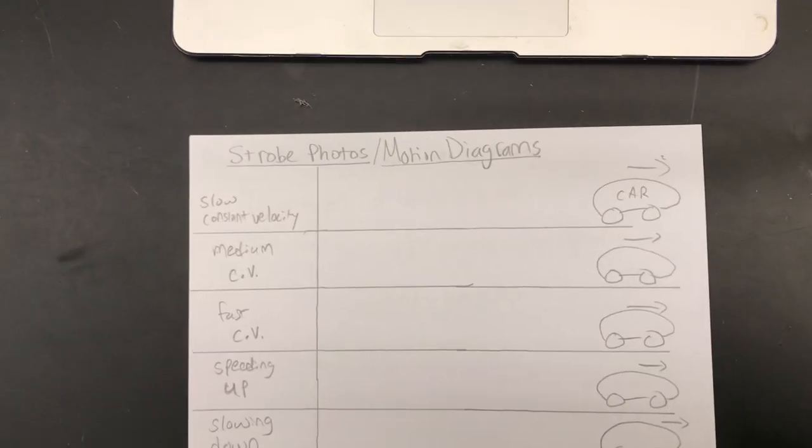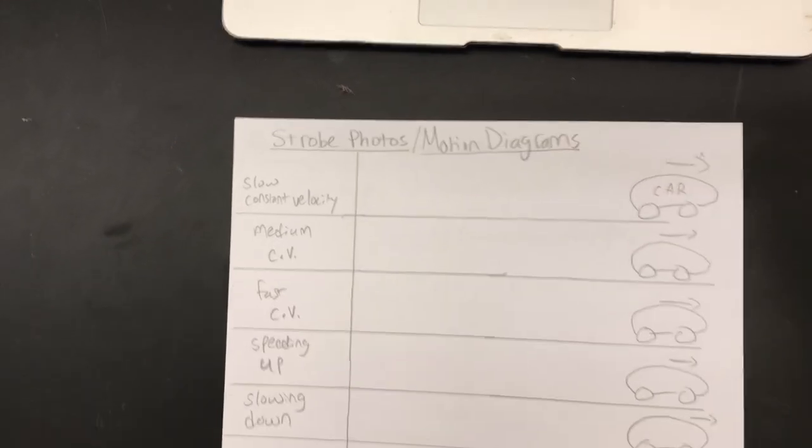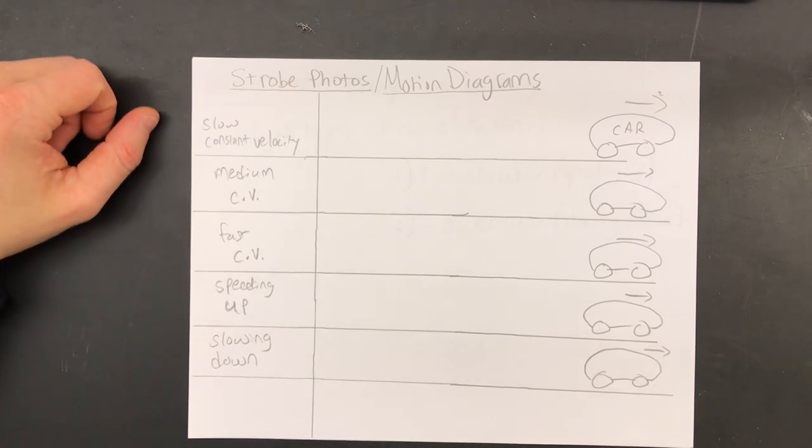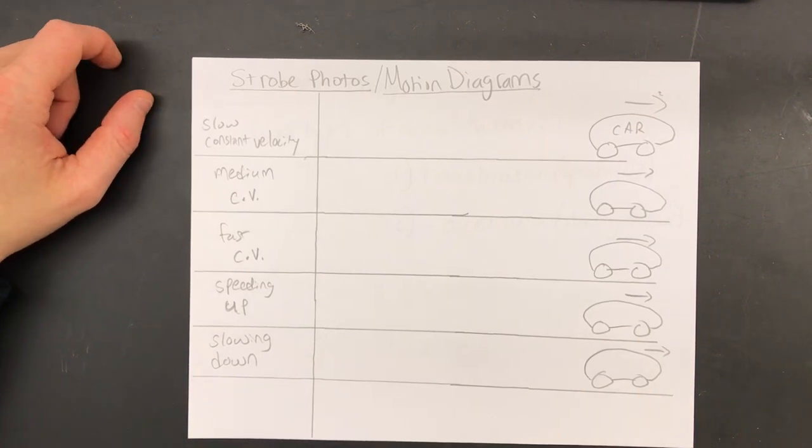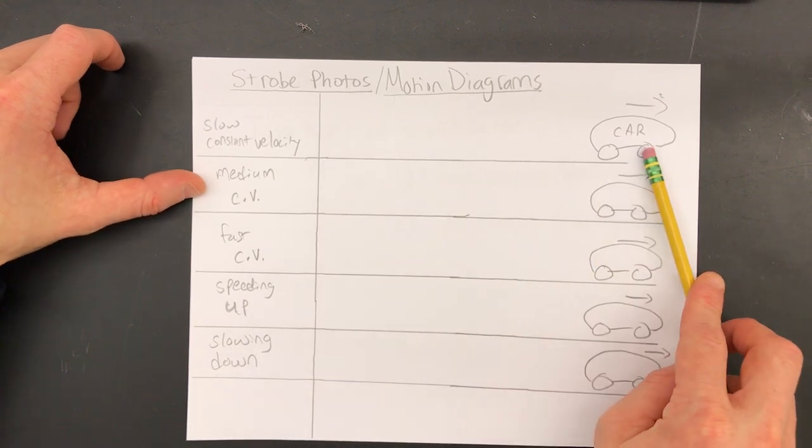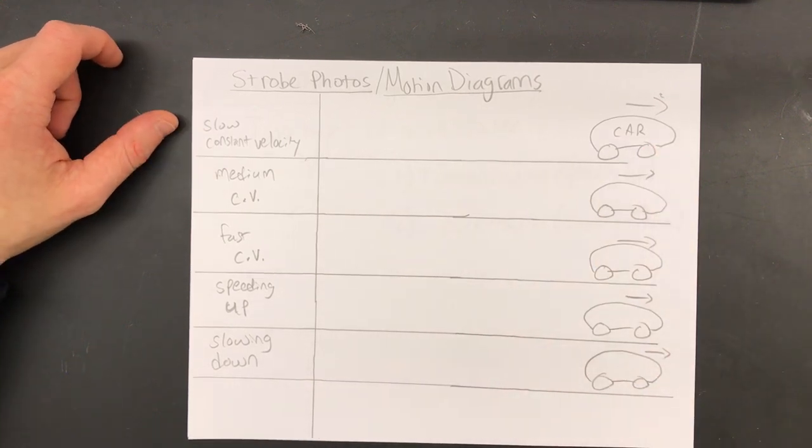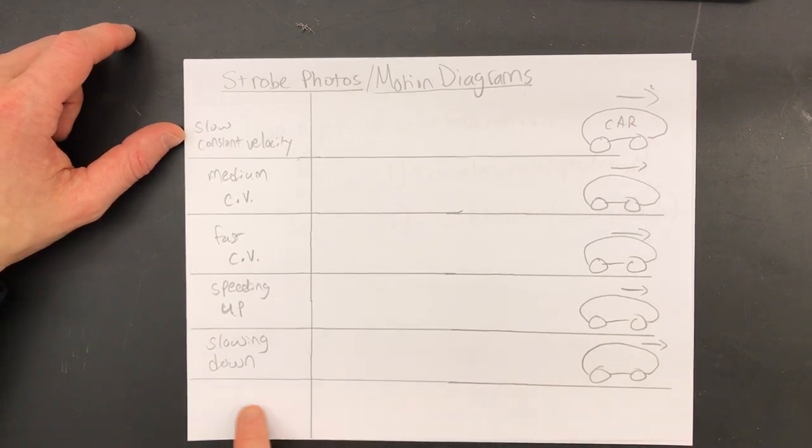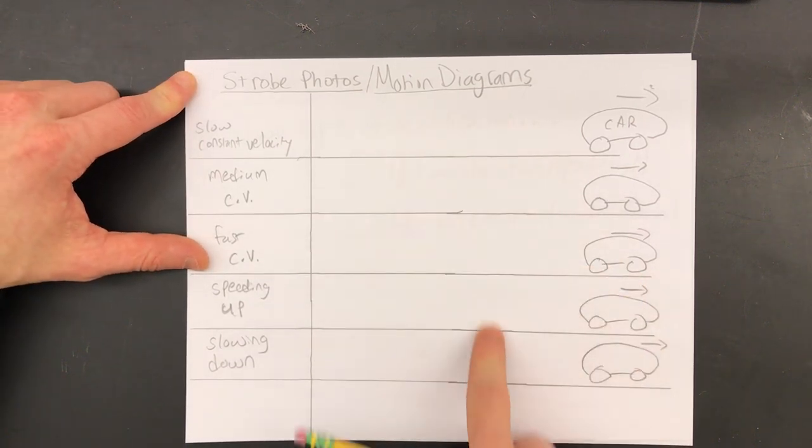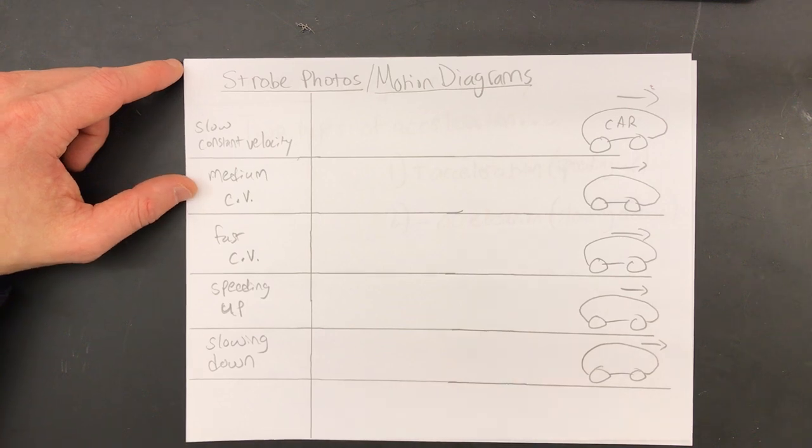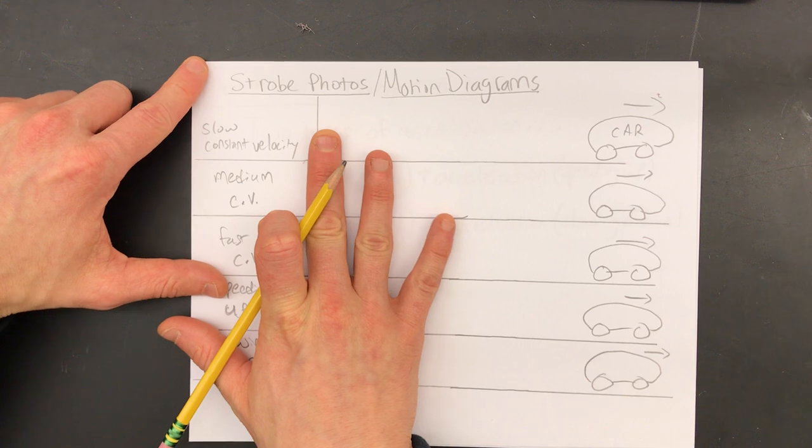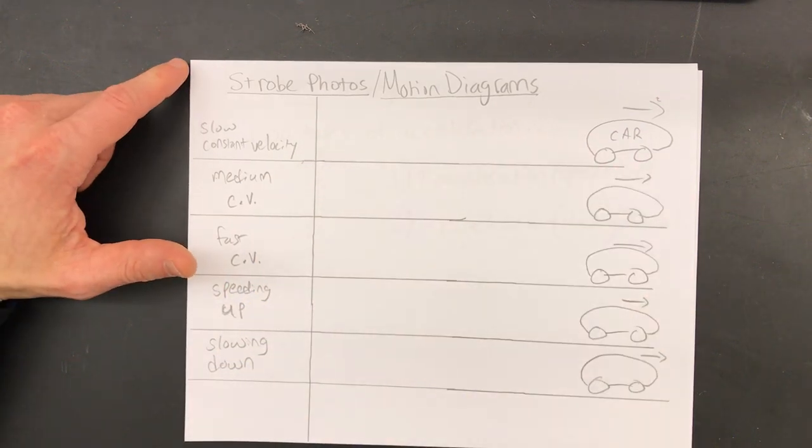This stuff you need to copy down. Now, you don't need to copy down the picture of the ball unless you really want to. So strobe photos are motion diagrams. We're going to draw strobe photos of a car that's moving from the left to the right. And the car does five different motions. So you need to make a table with two columns and five rows. And on the left side will be the beginning of the motion of the car and the right side will be the end of the motion of the car.